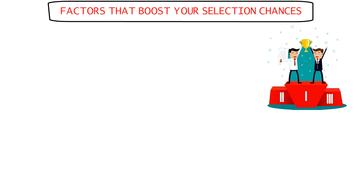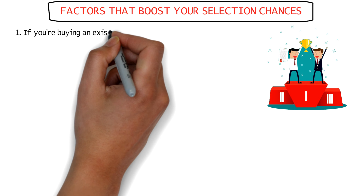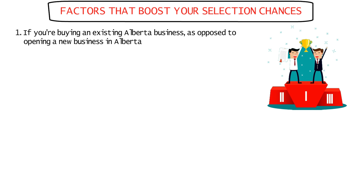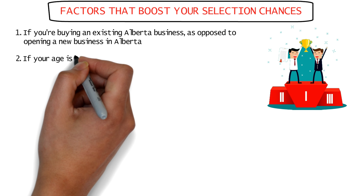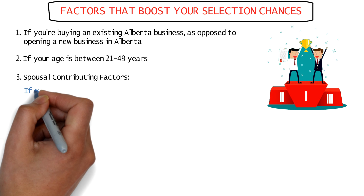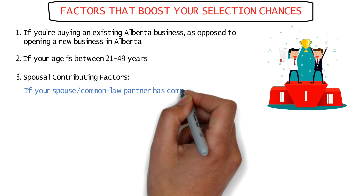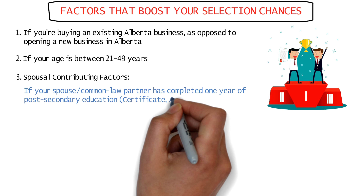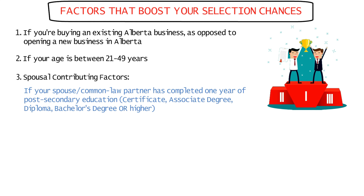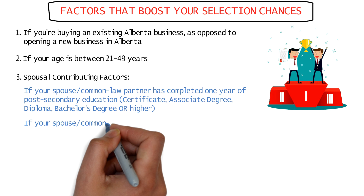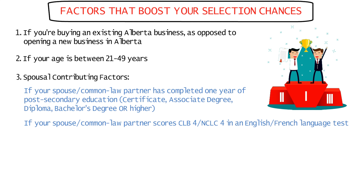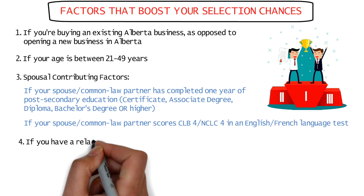There are a few factors that boost your chances of getting approved sooner. First and foremost, more preference is given to candidates willing to buy out existing Alberta businesses as opposed to opening their own. The preferred age is between 21 to 49 years. Spousal factors also help — for instance, if your spouse or common-law partner has completed at least one year of full-time post-secondary education, such as a certificate, associate degree, diploma, bachelor's degree, or higher. If they score CLB4 or higher on a language test, that would boost your chances as well.